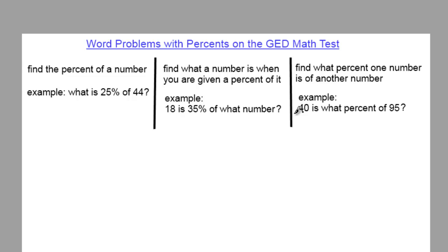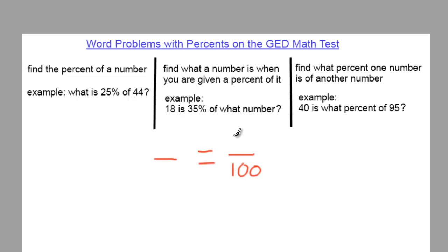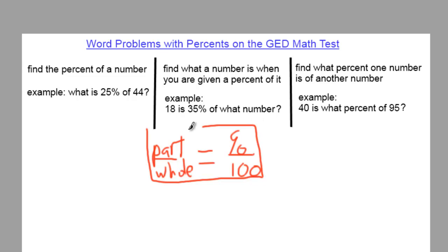The way to solve all three of these kinds of problems is basically the same. You set up an equation with two fractions, one on each side, and the denominator of this fraction will always be 100. What you put in the numerator, and in the other denominator, will depend on what information they give you and what you're trying to find. The percent goes in the numerator over 100. The part of the number value goes in the other numerator, and the whole number value goes in the other denominator.